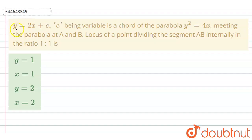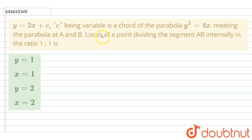Hello students. Today's question is: y equal to 2x plus c, where c being a variable, is the chord of the parabola y² equal to 4x, meeting the parabola at A and B. The locus of the point dividing the segment AB internally in the ratio 1 is to 1 — we have to find that value.